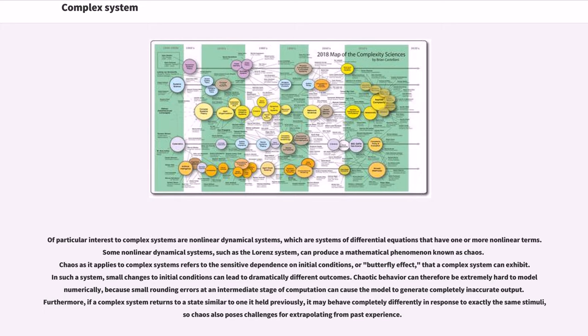Of particular interest to complex systems are nonlinear dynamical systems, which are systems of differential equations that have one or more nonlinear terms. Some nonlinear dynamical systems, such as the Lorenz system, can produce a mathematical phenomenon known as chaos. Chaos as it applies to complex systems refers to the sensitive dependence on initial conditions, or butterfly effect, that a complex system can exhibit.